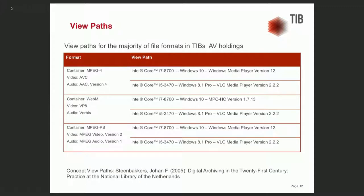The National Library of the Netherlands uses the concept of a view path for each format. A view path consists of three components: the hardware platform, the operating system, and the software version with which the format can be rendered. The National Library of the Netherlands maintains at least two valid view paths for each format. I wanted to achieve the same for our formats, so I took the three most used formats in our archive and tested different view paths.